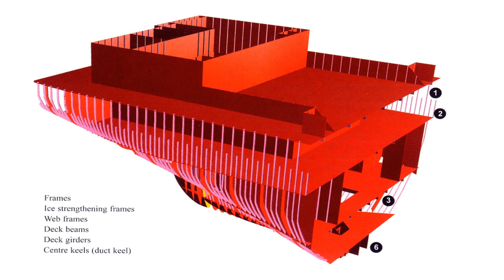This cross section shows a container ship near the engine room, which has many transverse frames. Number one in the picture are the frames, number two are the ice strengthening frames, number three are the web frames, number four are the deck beams, and number six is the center keel — also known as duct keels — which provides additional strengthening.